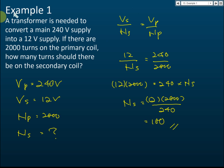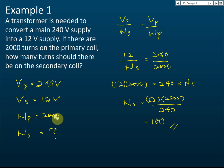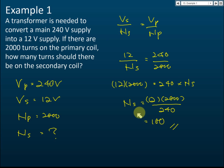The answer is 100. First, list the information: the input (primary voltage) Vp = 240 V, the output (secondary voltage) Vs = 12 V, and the number of primary turns Np = 2000. We want to find Ns. Substitute these three values into the equation and solve — you should get Ns = 100. So the number of turns in the secondary coil is 100.